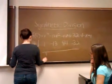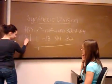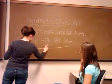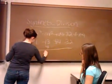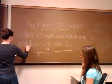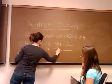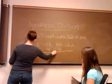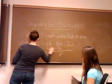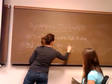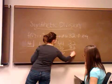So we bring the 1 down, multiply it by the 4, and that gives us 4, and then negative 13 and 4 is negative 9 times 4 equals negative 36. And then, 44 and negative 36 is 8. Multiply it by the 4, and that gives us 32. Negative 32 and 32 is 0.